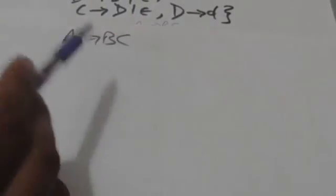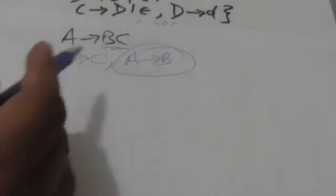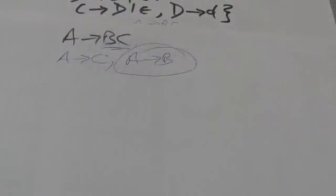For the production A → BC, B and C are nullable variables. This production is added to set P2. We also add A → C, obtained by deleting B, and A → B, obtained by deleting C. Since B and C are both nullable, we cannot remove both — that would give an empty production, which is not added to P2.